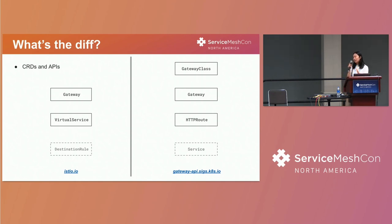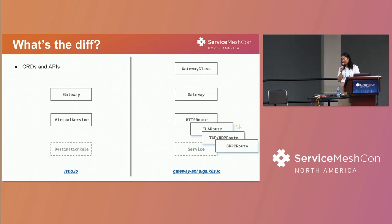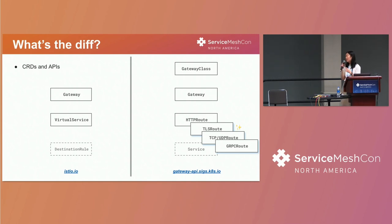These are the beta resources you have access to now. But in alpha, you also have access to other routes like TLS, UDP, TCP, and gRPC. You can see that these are protocol-specific routes designated for different protocols, whereas the virtual service is kind of the catch-all for everything, which is really nice.